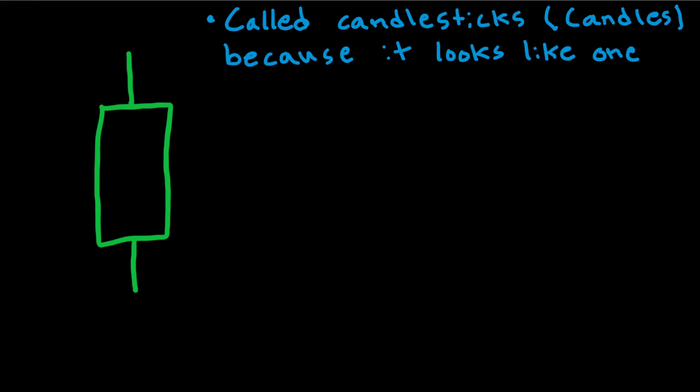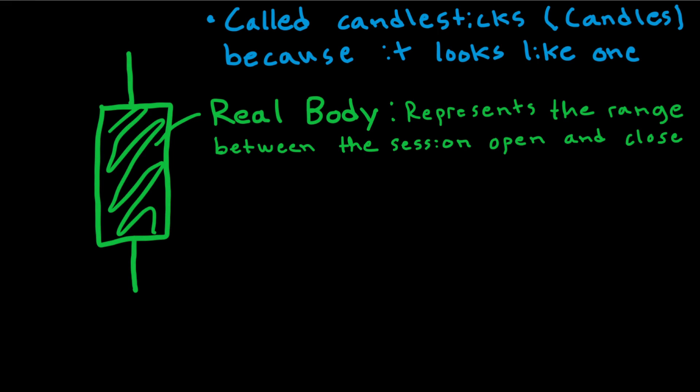Well, the part that looks like a rectangle, this green part right here, is what we call the real body of the candle. And what does the real body represent? Well, the real body represents the range between the session open and close. So for example, where the day starts and where the day ends. But the session can be anything from one day, one week, or even down to like five minutes.